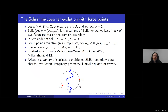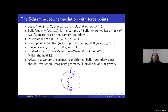Next I want to introduce SLE with force points, which is in some ways the most natural generalization of SLE. In this talk we consider the case of SLE with two force points. We let kappa, D, A, and B be as before, but now we have two additional points z-minus and z-plus on the domain boundary, and two parameters rho-plus and rho-minus. SLE kappa rho is the natural variant of SLE where we keep track of the location of two force points on the domain boundary. It still satisfies some variant of conformal invariance and the domain Markov property, where we also keep track of the location of these two marked points. In the remainder of the talk, we assume these two marked points lie infinitesimally to the left and right of the starting point of the curve.